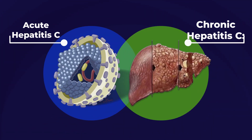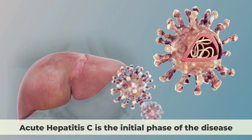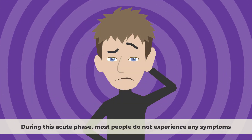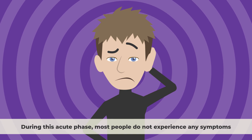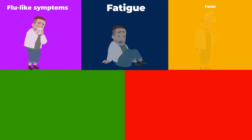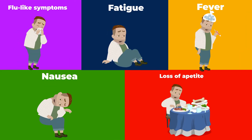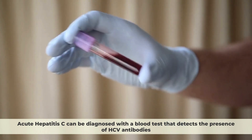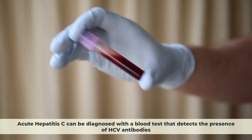Acute versus Chronic Hepatitis C. Acute Hepatitis C is the initial phase of the disease. It occurs within the first six months after exposure to the virus. During this acute phase, most people do not experience any symptoms; however, some may develop flu-like symptoms such as fatigue, fever, nausea, and loss of appetite. Acute Hepatitis C can be diagnosed with a blood test that detects the presence of HCV antibodies.